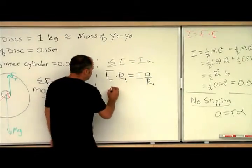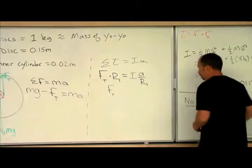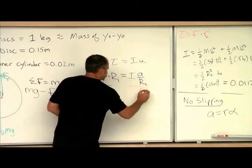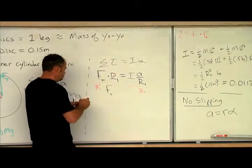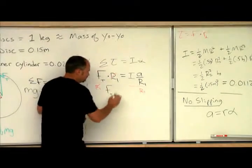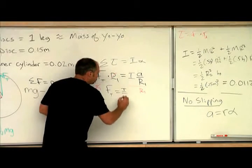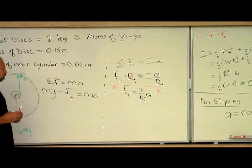And if I solve for ft, well, how would I do that? I just divide both sides by r1. And here these guys cancel, and here I get a dr1 squared in the denominator. So I get i over r1 squared times the acceleration.